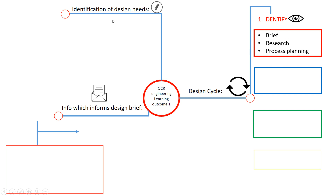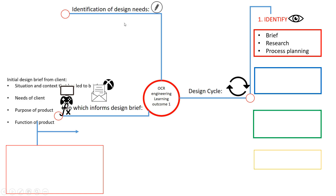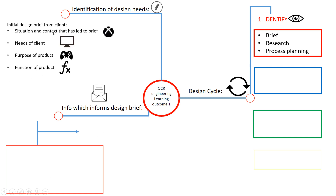When writing a brief, we need to understand the identification of design needs. This might give information around the situation and context that led to the brief. For example, if we are designing a games control system for someone with arthritis, the needs of that client are going to be very different to a normal games controller — in terms of purpose, function, soft touch, bigger triggers, or different positioning.